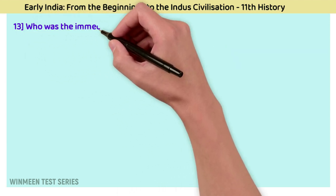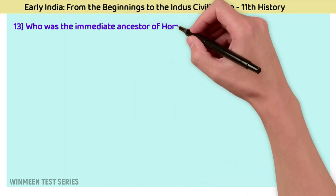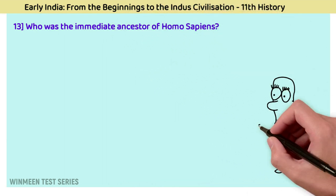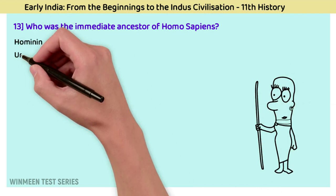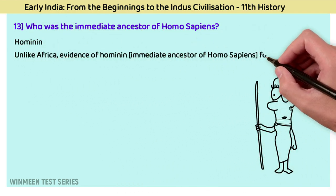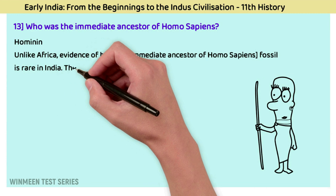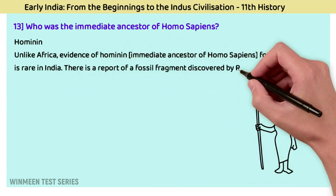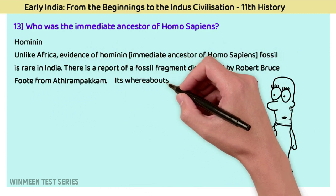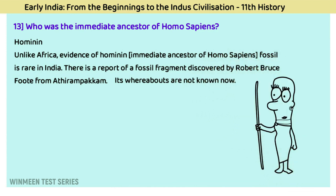Question 13: Who was the immediate ancestor of Homo sapiens? The answer is Hominin. Unlike Africa, evidence of hominins — the immediate ancestors of Homo sapiens — in the form of fossils is very rare in India. There is a report of a fossil fragment discovered by Robert Bruce Foote from Attirambakkam, but its current whereabouts are unknown.